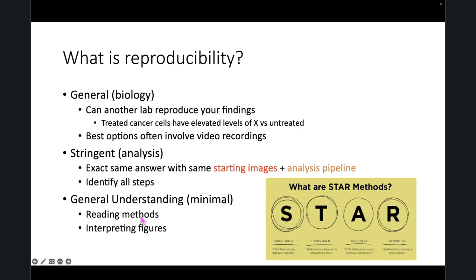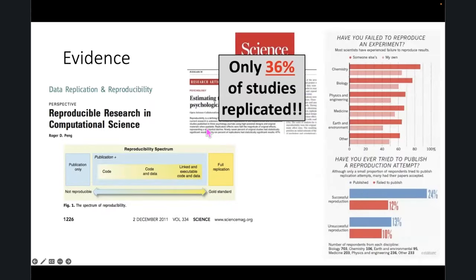Interpreting figures is another issue. There's a bunch of information on why there's a reproducibility problem. One interesting point is that there are complaints even in computer science about people creating publications without code or without data. So even computer scientists are having problems — what hope is there for the rest of us?